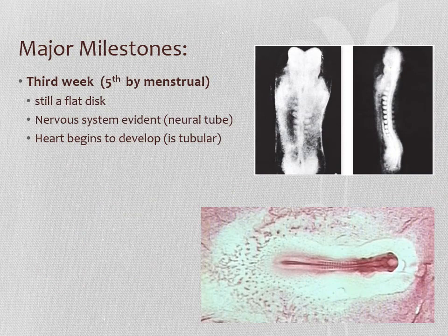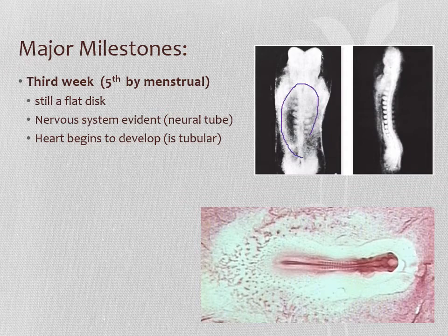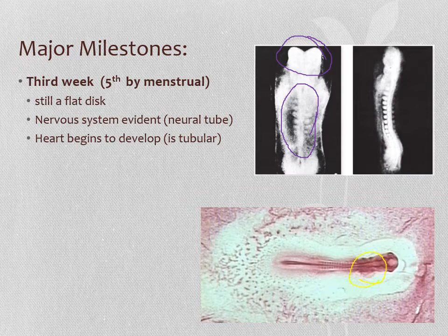At the third week, which is the fifth week bimenstrual, we're still a flat disc but we start to form some noticeable structures. This is when the nervous system is beginning to form, so we're beginning to get a spinal cord. This structure up here is going to turn into the brain. We're also beginning to get a bit of a heart — but it's just a tube at this point. It doesn't have four chambers; it's just one big tube.